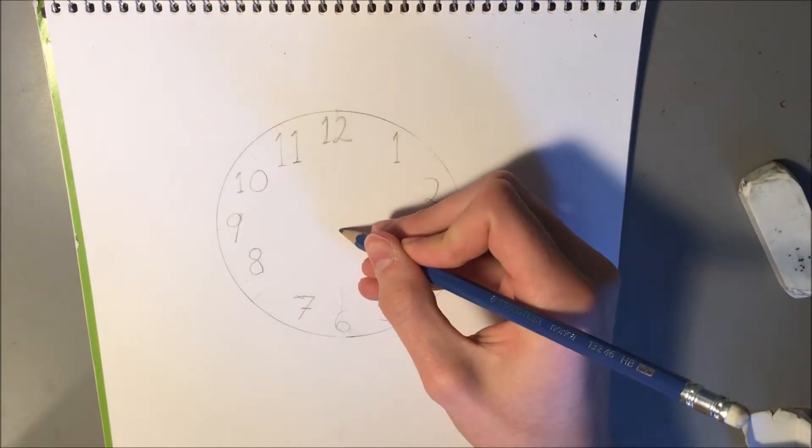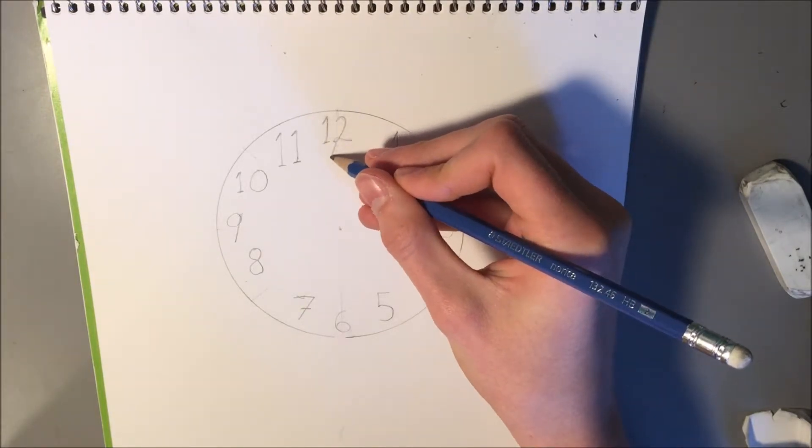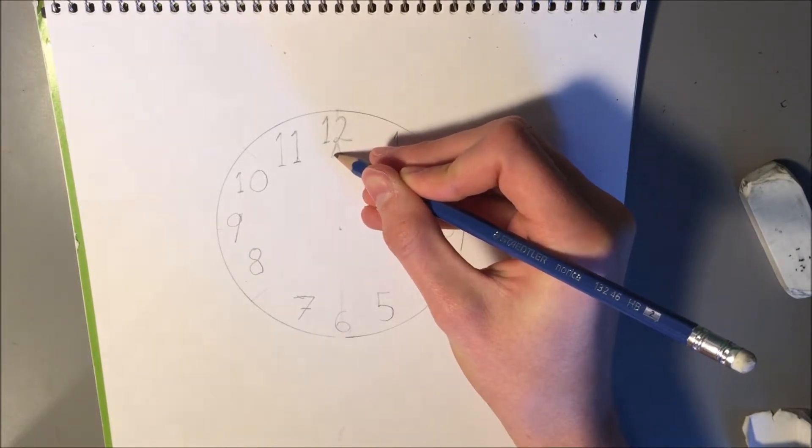Finally, all that's left for you to do is draw the hands of the clock. Keep in mind that the hour hand is shorter than the minute hand. Draw two thick arrows.